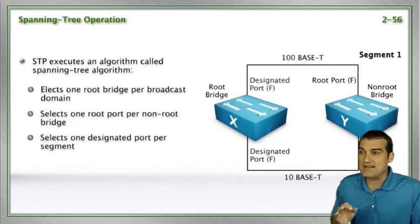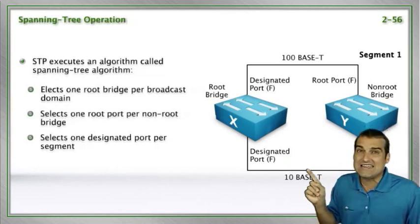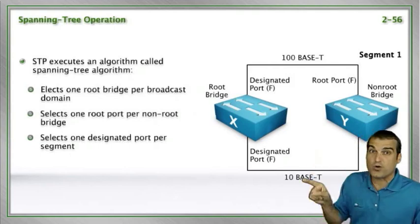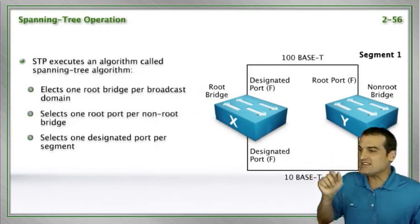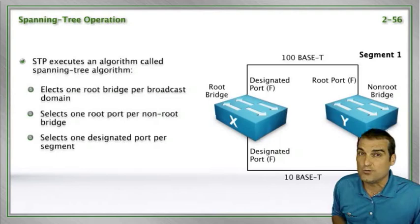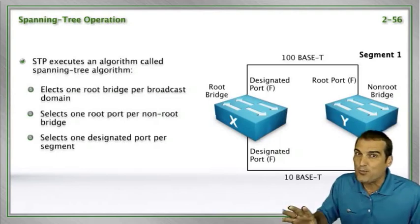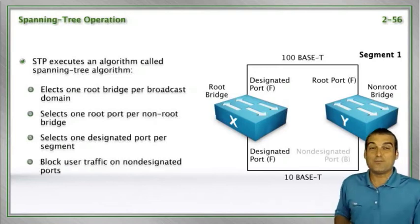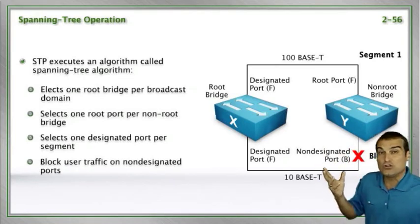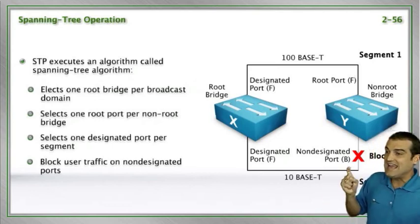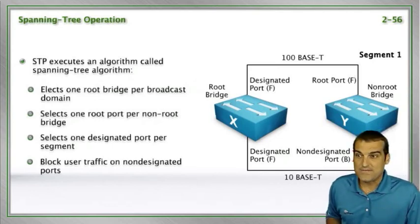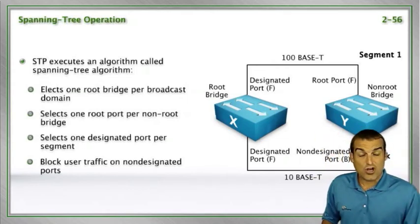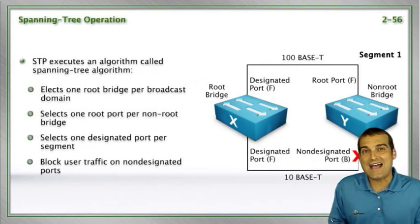Then the spanning tree protocol says, let's have a designated port on each and every segment. It'll also be forwarding traffic. And notice that by definition on the root, everything will be designated. All ports on the root device are designated. So now they're all forwarding. And now the last step of the process, anything that's left over, we'll call non-designated and will be blocking. So this is the four-step process that spanning tree protocol is doing for us behind the scenes.